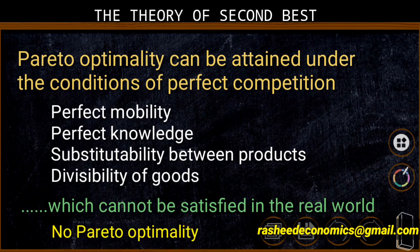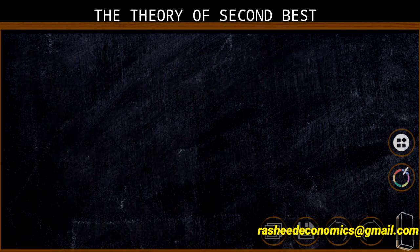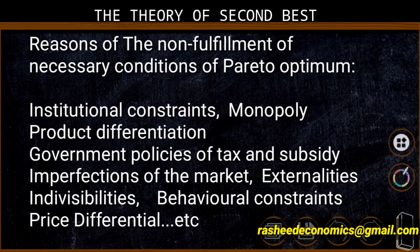If the conditions are not satisfied, we automatically cannot reach Pareto optimality. The non-fulfillment of the necessary conditions for Pareto optimum may occur because of various reasons such as institutional constraints, monopoly, product differentiation, government policies related to tax and subsidy, imperfections in factor and product markets, externalities, indivisibilities, behavioral constraints of economic agents, price differentials in product and factor markets, etc. These reasons restrict the system from reaching Pareto optimality.